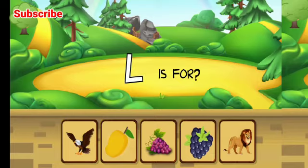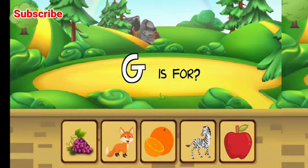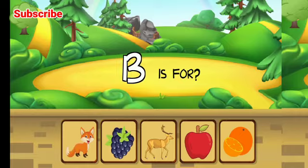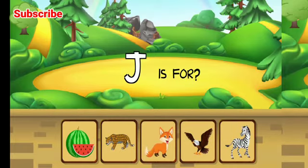L is for lion, fantastic. G for goat, grapes, correct. B is for... try again, try again. Blackberry, excellent. J is for...